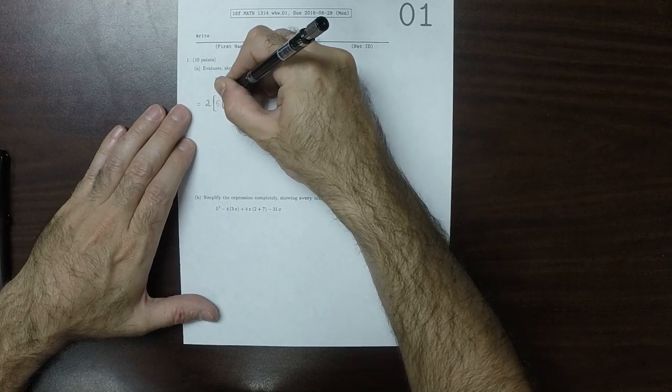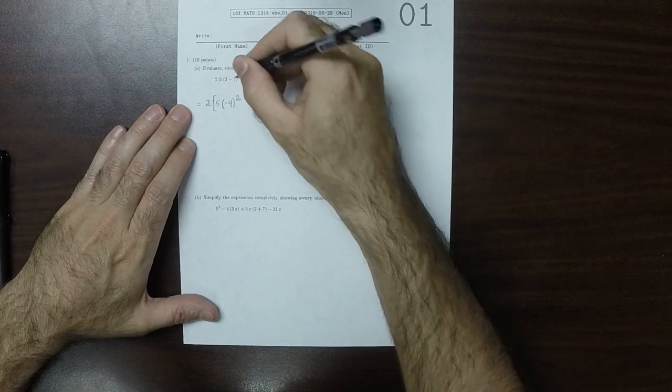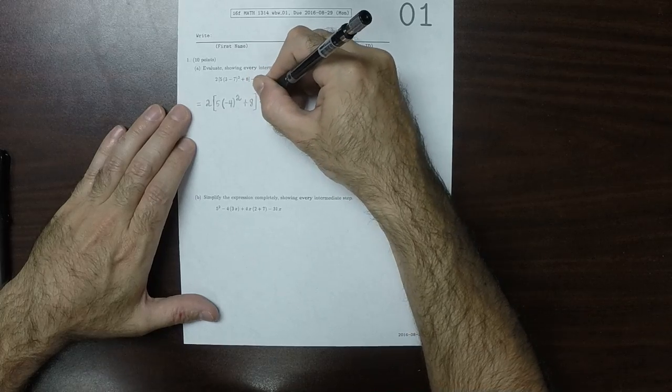So this would be 5 multiplied by negative 4 squared, because 3 minus 7 is negative 4, plus 8 minus 10.